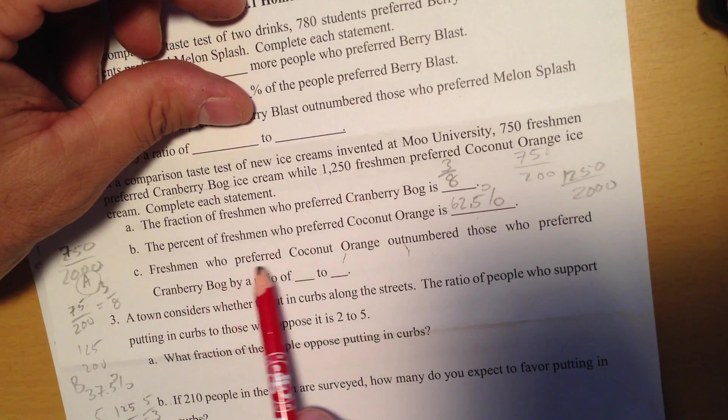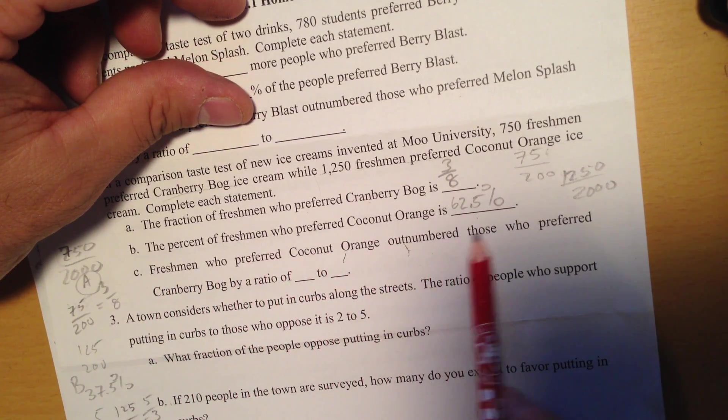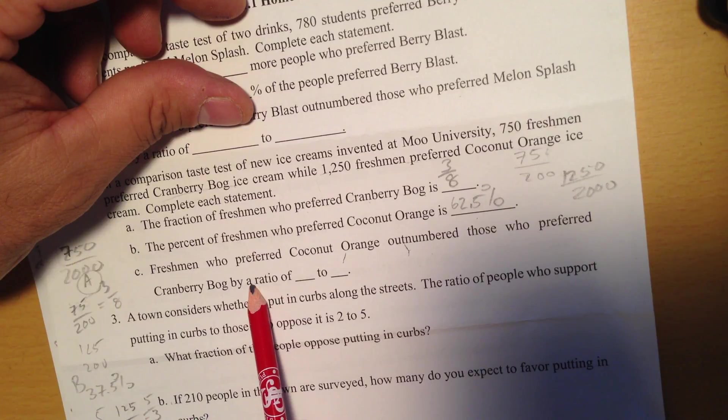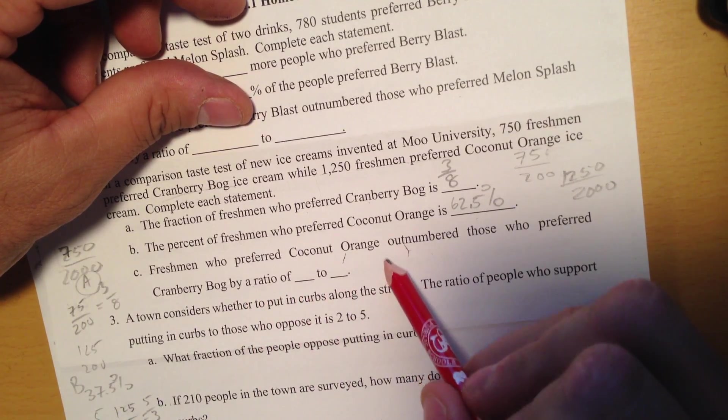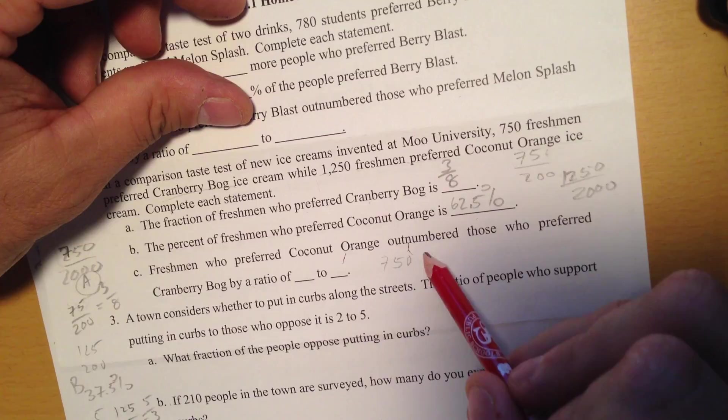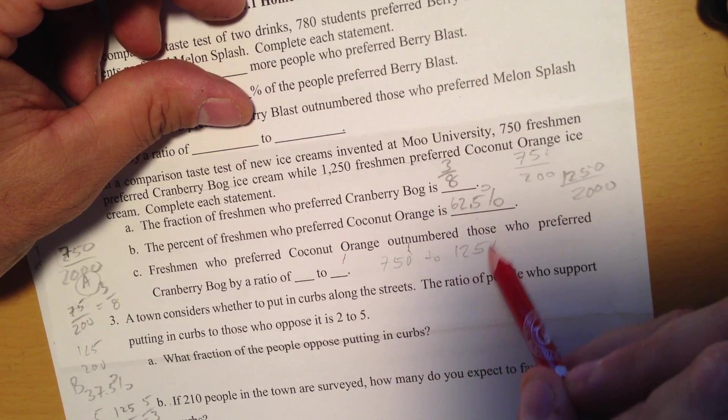C. Freshmen who preferred coconut orange outnumbered freshmen who preferred cranberry bog by a ratio of blank to blank. Well, that's 750 to 1,250, too big.